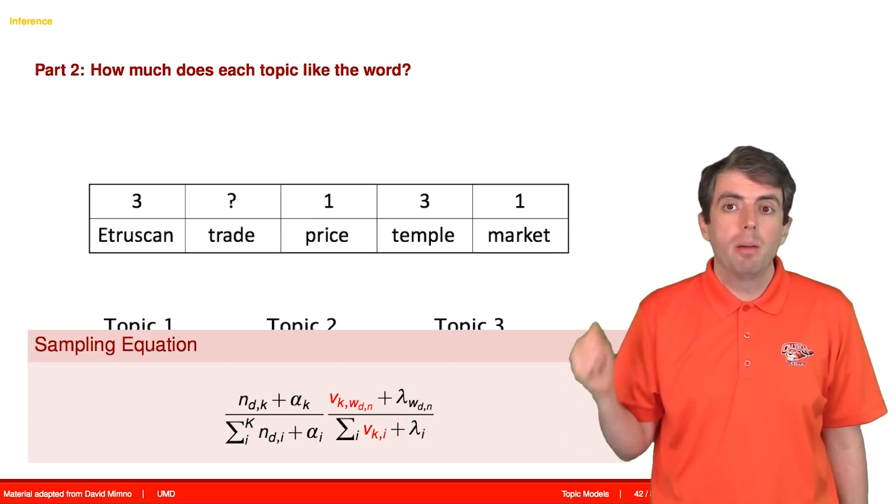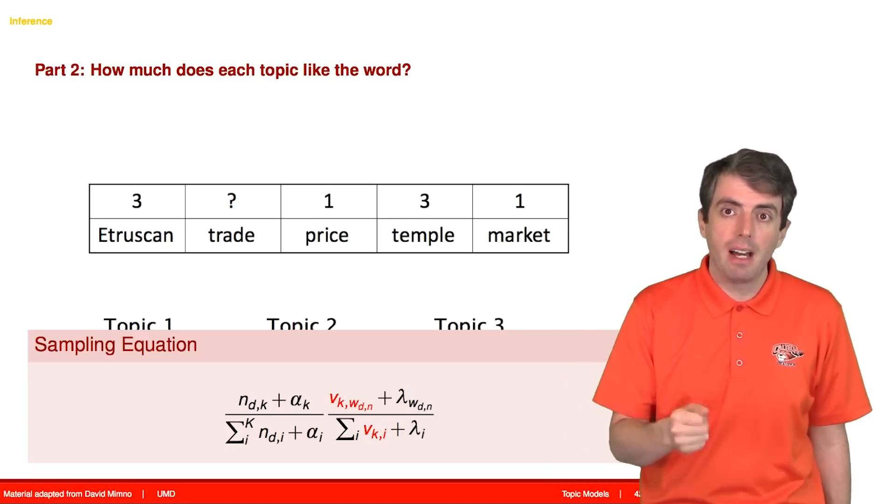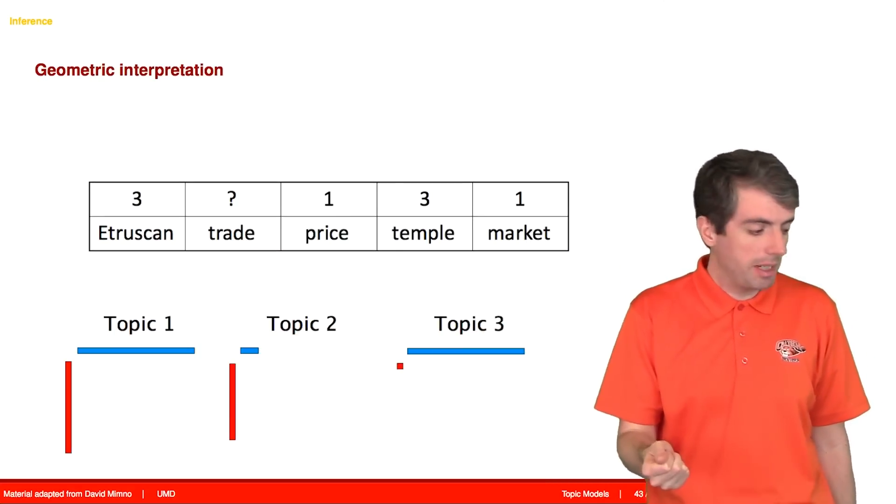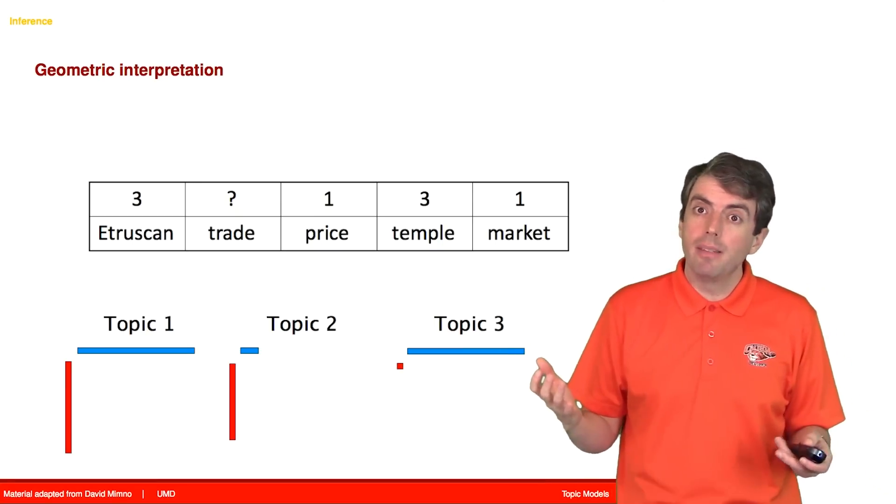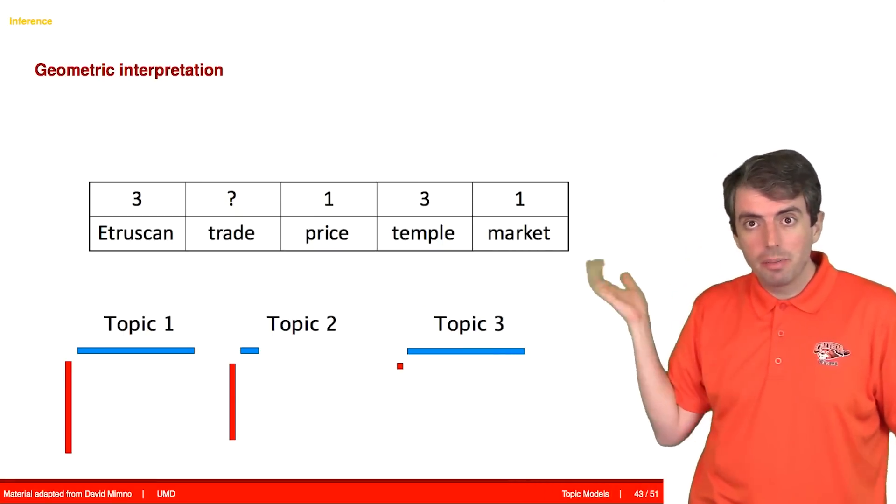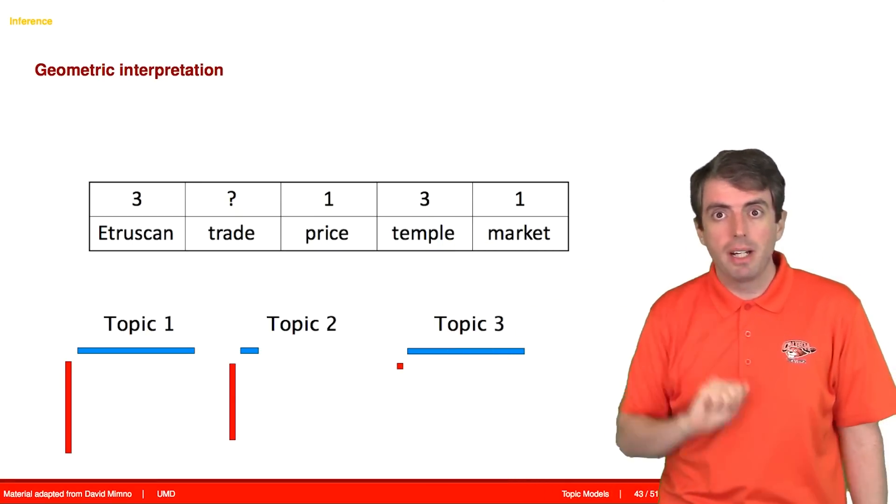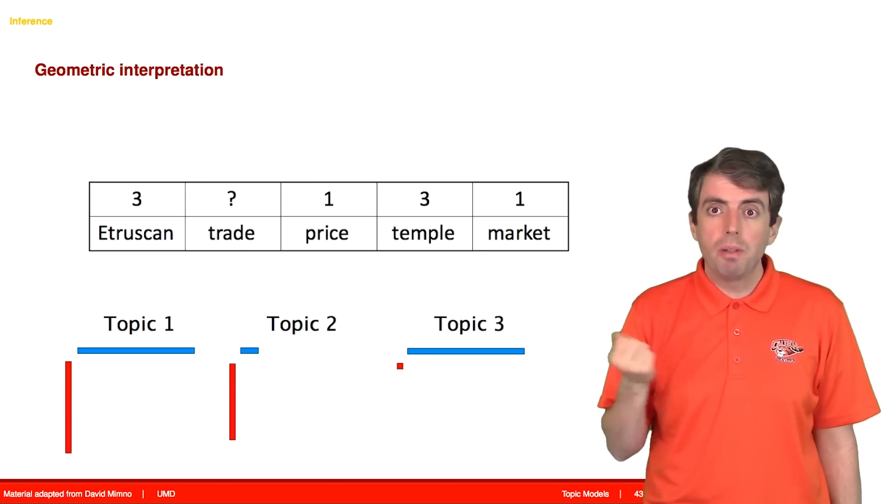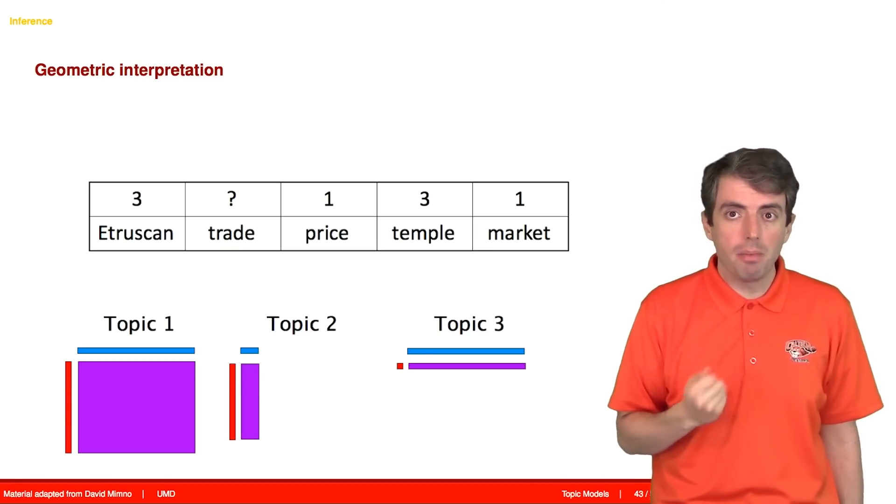So the second term is how much the topic likes a word. That gets multiplied by the first term that corresponds to how much the document likes each of the topics. And we can think about this geometrically, where the width corresponds to the first term, and the height corresponds to the second term. So when we multiply those together, we get the probabilities.